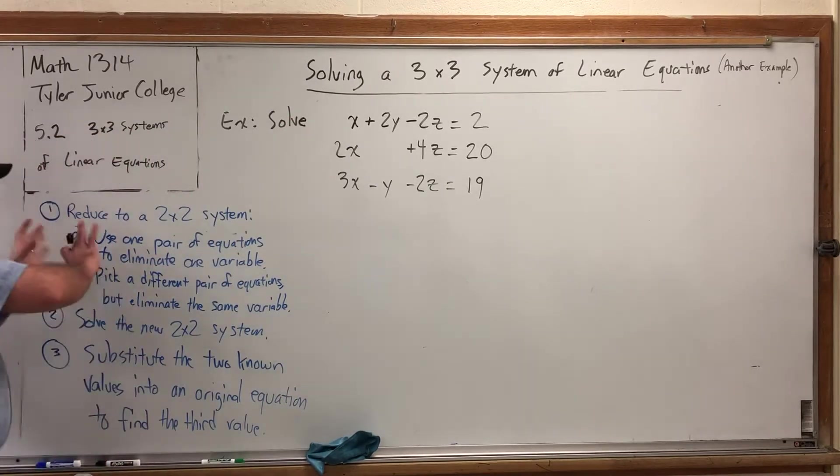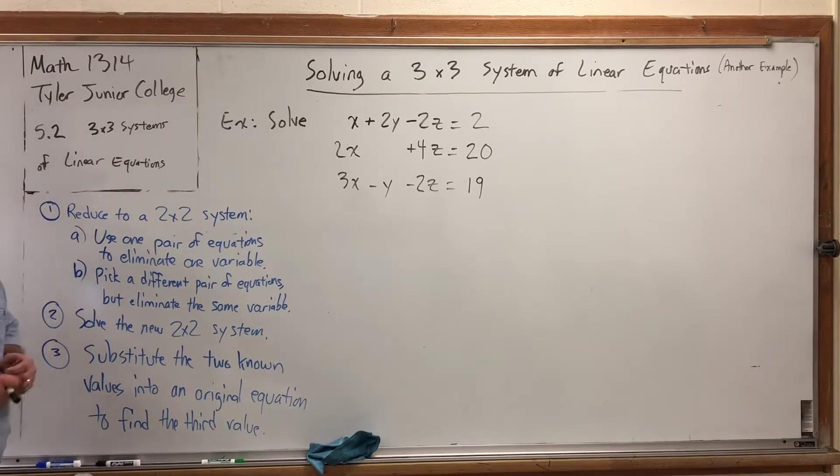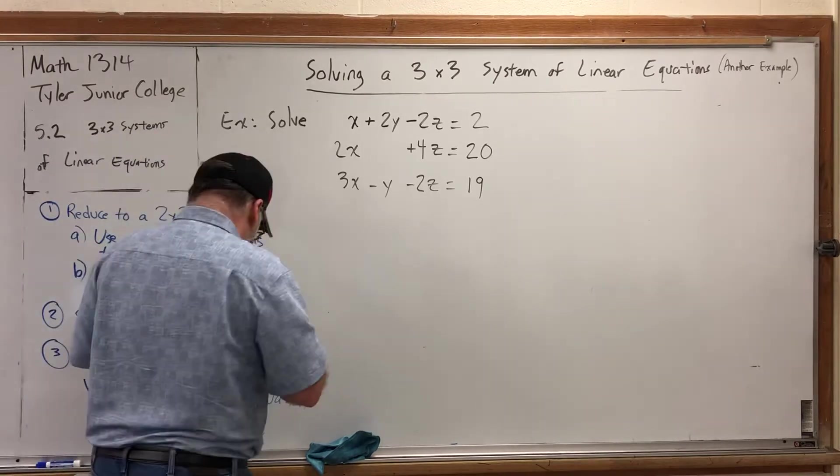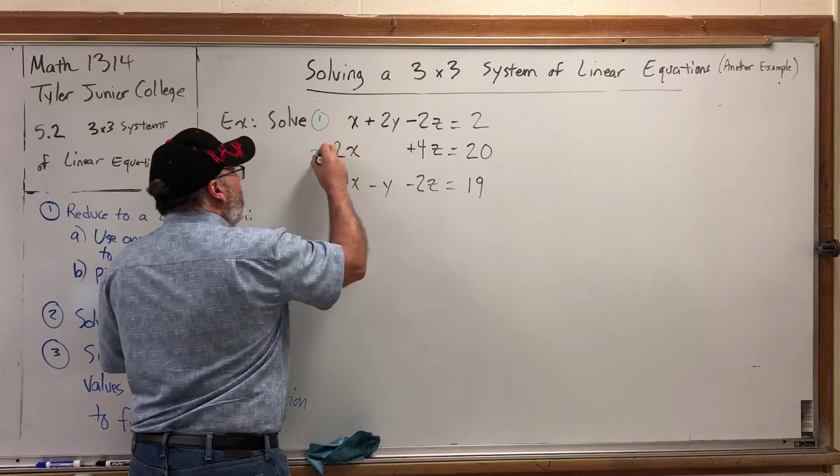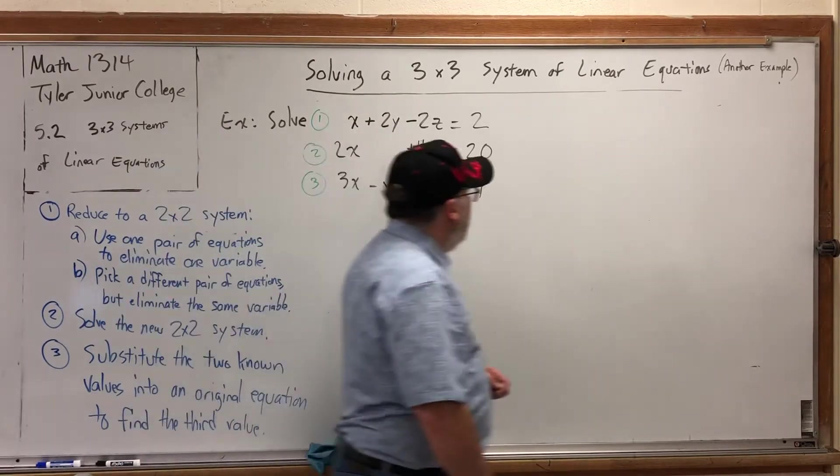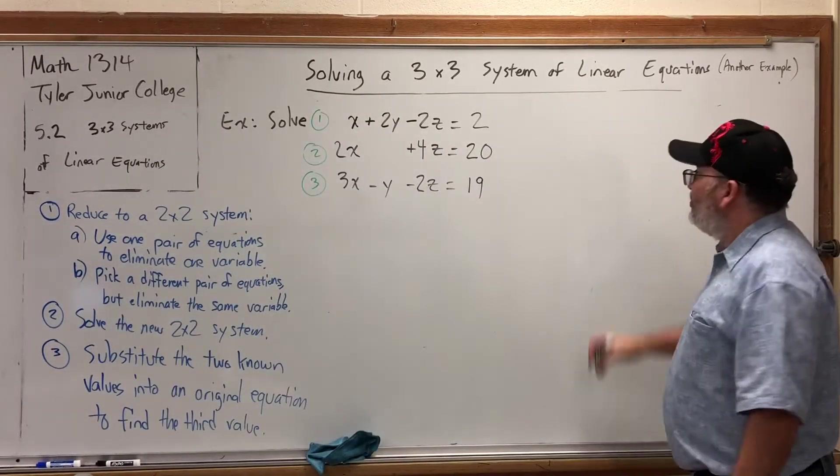So, I'm going to kind of bend this a little bit. Because, if you already have an equation with two variables, I would take advantage of it. Here's how you would take advantage of it. If we number our equations 1, 2, and 3, I'm already halfway to a 2x2 system.